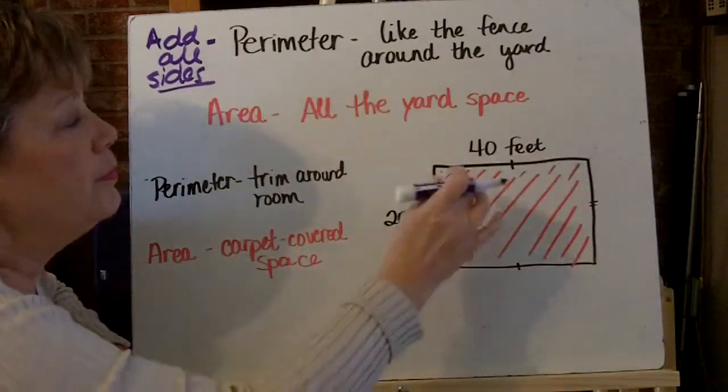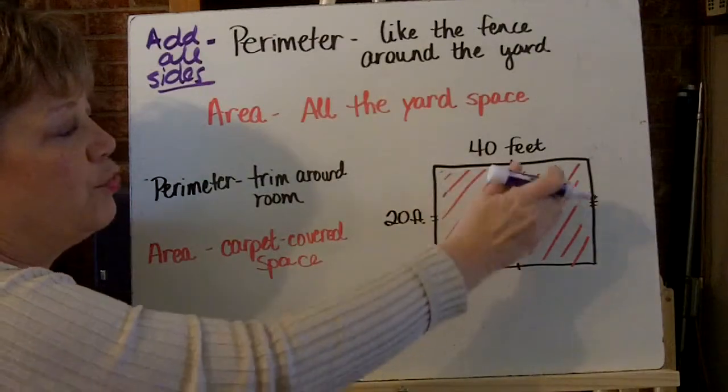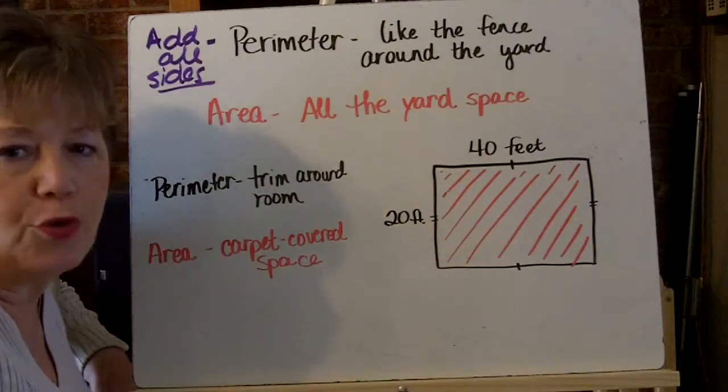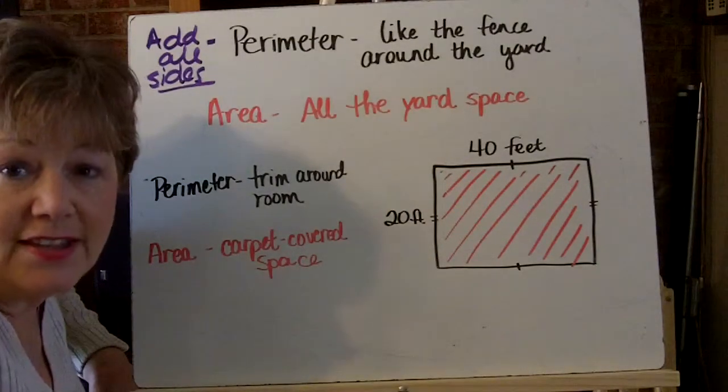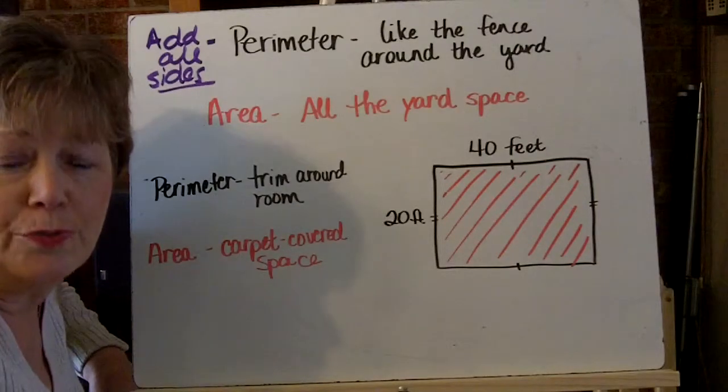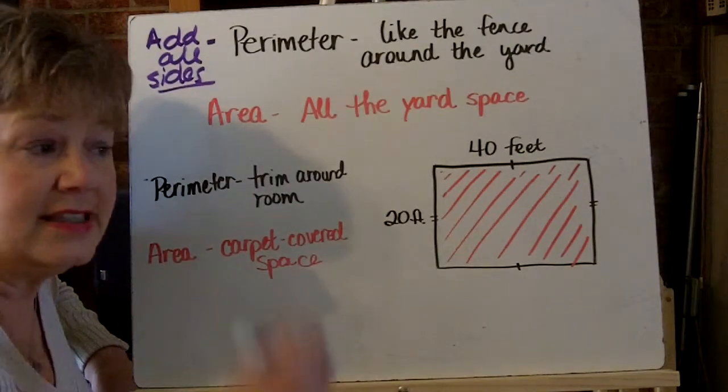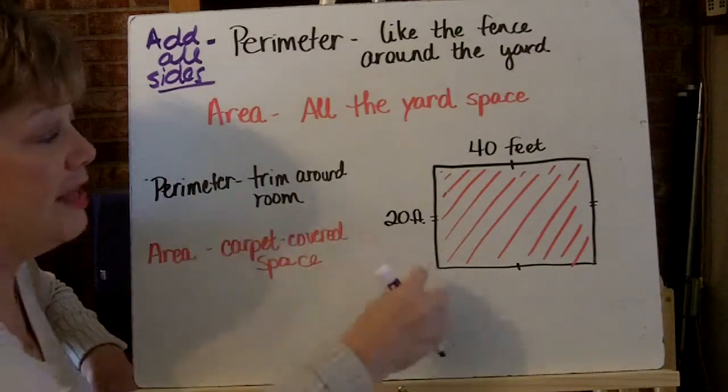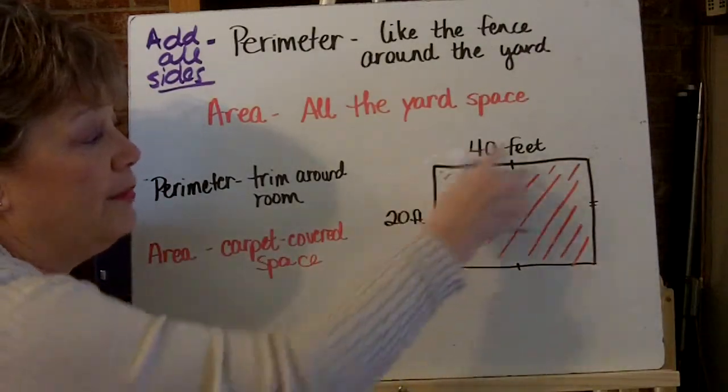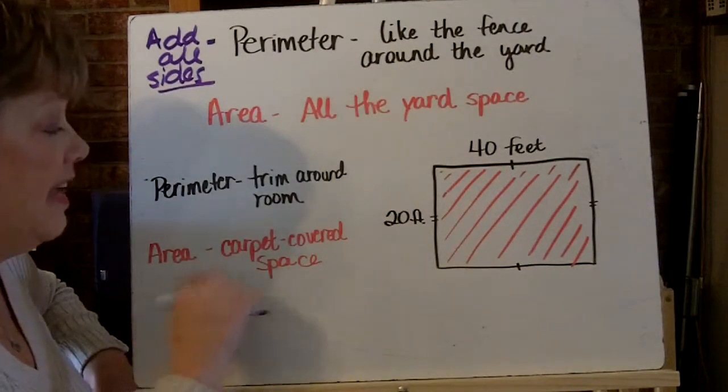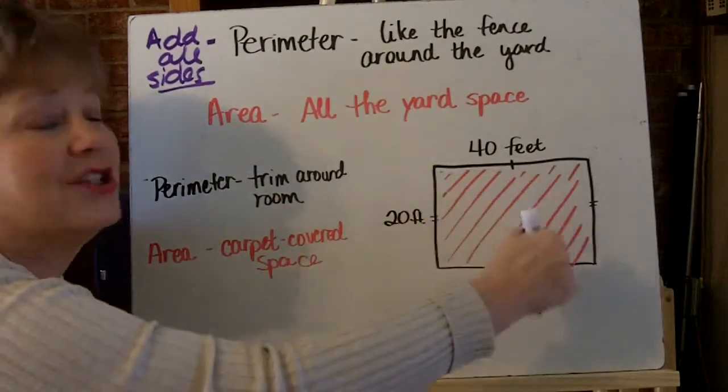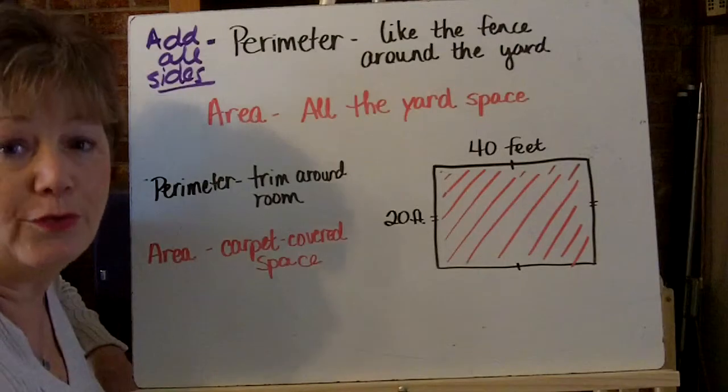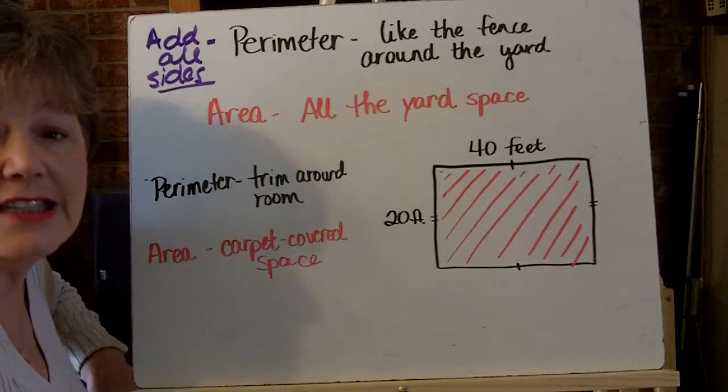The black is the perimeter. The area is the red. It's all the grass inside of the fence, or if you're thinking of a pasture, it's all the land inside that fenced in pasture. Or if you're back to the house and this is the trim around your family room, then the area is everything that's carpeted or the wood floor. So that's the difference.